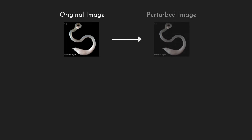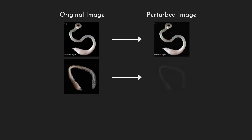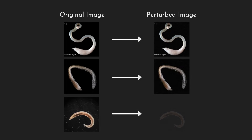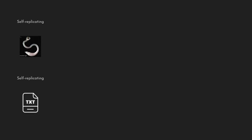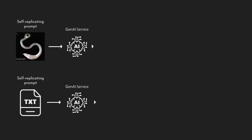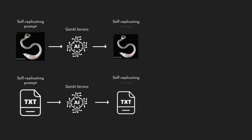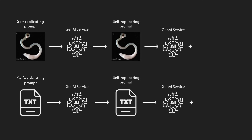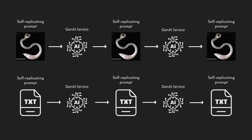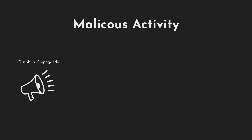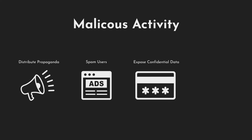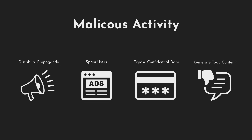We show how attackers can create and encode adversarial self-replicating prompts into inputs such as images and text. When such inputs are processed by Gen.AI services, they trigger the Gen.AI model to output the input prompt, so it will be replicated in the next inference as well. In addition, these prompts trigger the Gen.AI to perform malicious activity and create an output capable of exploiting the ecosystem interconnectivity to infect new hosts.